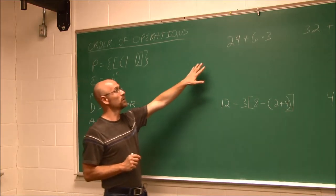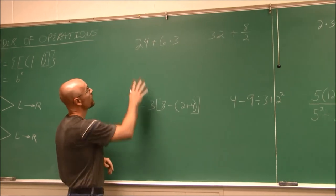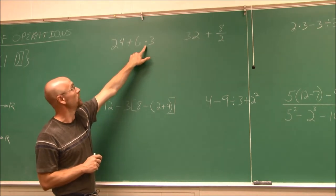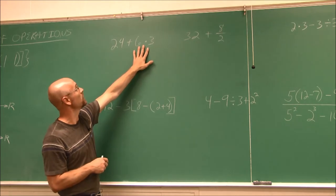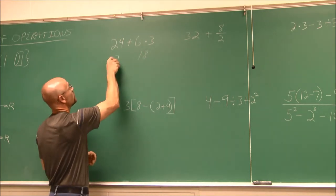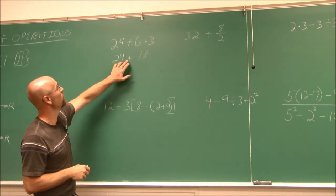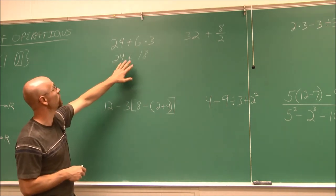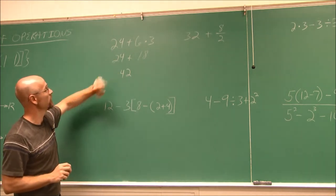We're going to follow order of operations and do some examples. Looking at this expression: there are no grouping symbols, no exponents, but there is multiplication. That's my first starting point. 6 times 3 is 18. Working vertically, I rewrite the whole problem after each step: now I have 24 plus 18. There's only one operation left — addition. 24 plus 18 is 42. So we've simplified this to 42.